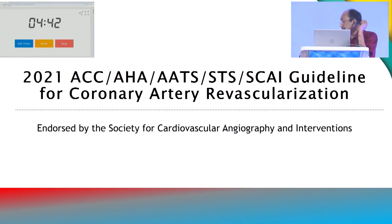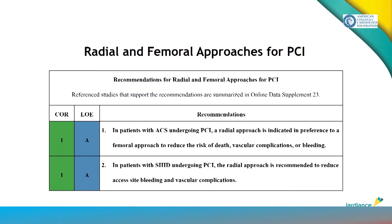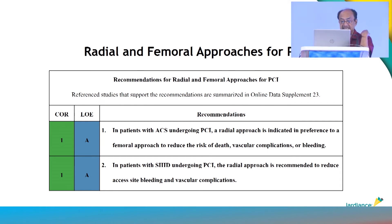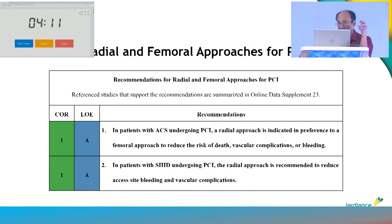The 2021 ACC/AHA recommendation: the radial approach is always better than the femoral approach. In patients with ACS undergoing PCI, a radial approach is indicated in preference to the femoral approach to reduce the risk of death, vascular complications, and bleeding. This conclusion was drawn from two mega trials — the MATRIX trial and the RIVAL trial — which showed that MACE can be reduced if patients with NSTEMI undergo intervention through the radial route.